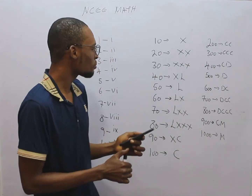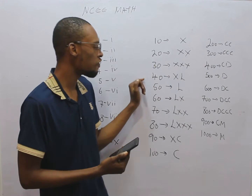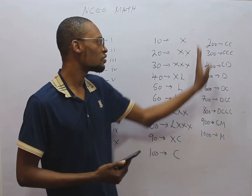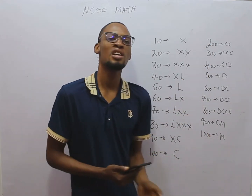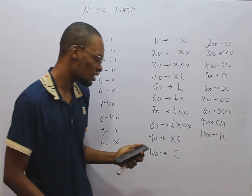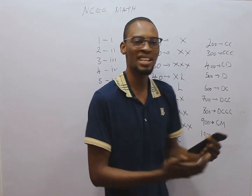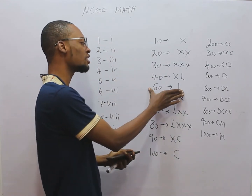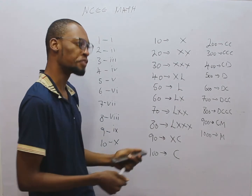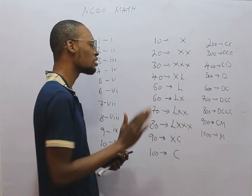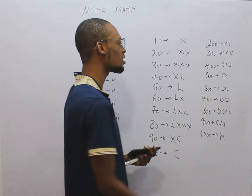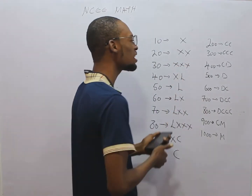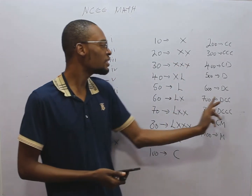If you know Roman figures one to ten, then you simply know Roman figures for 20, 30, 40, 50, 60, 70, 80, 90, 100, then 200 to 1000. With this you'll be able to answer any Roman figure question. For example, if you know that 5 is V and 50 is L, you are asked for 55 — it is simply LV.